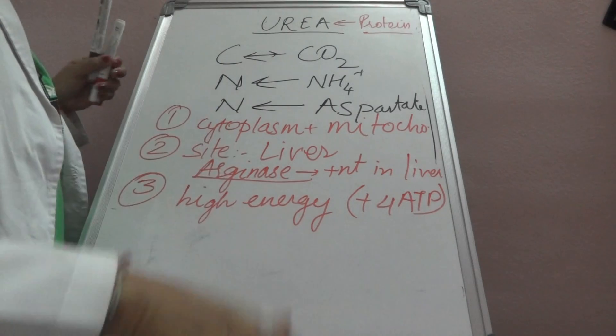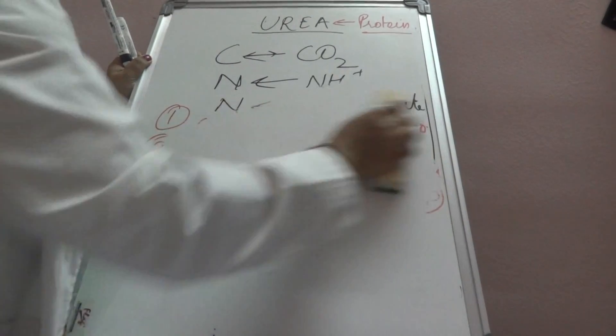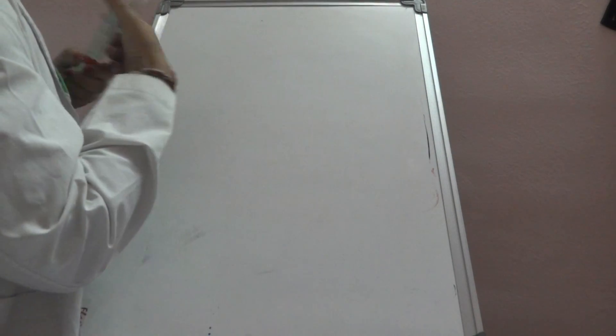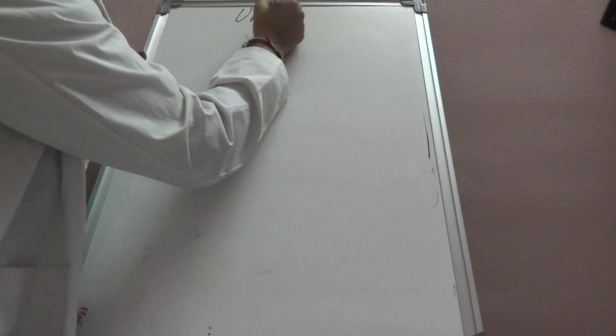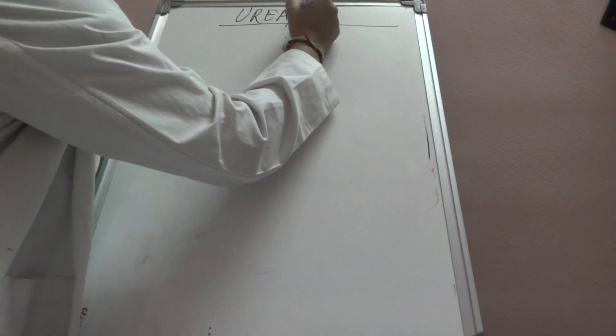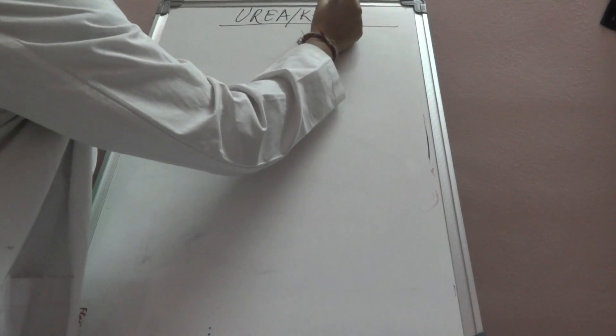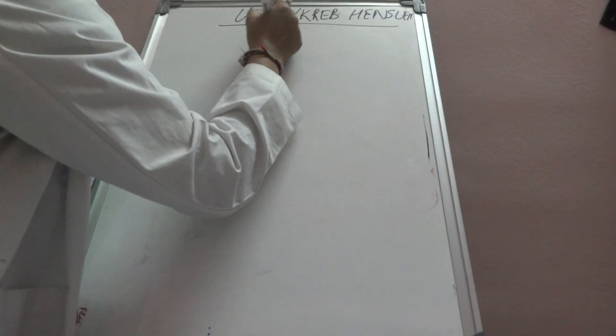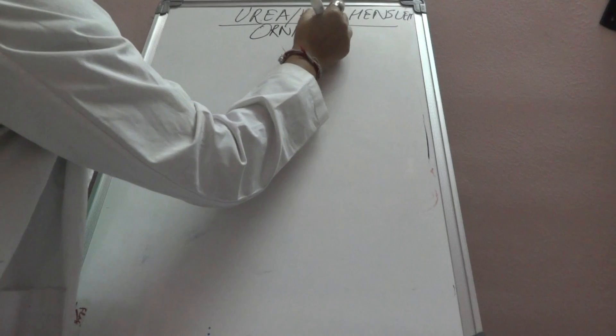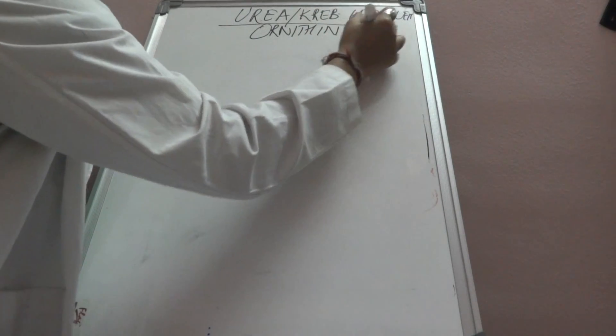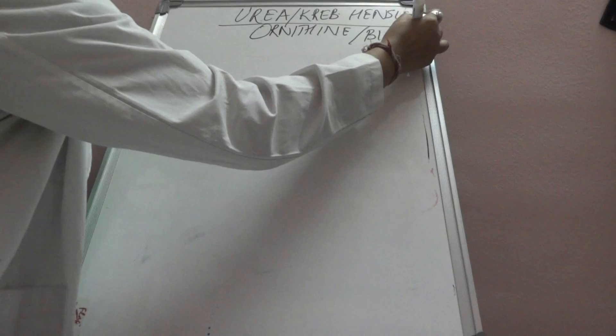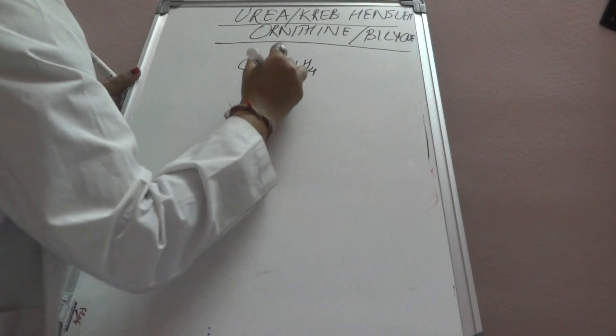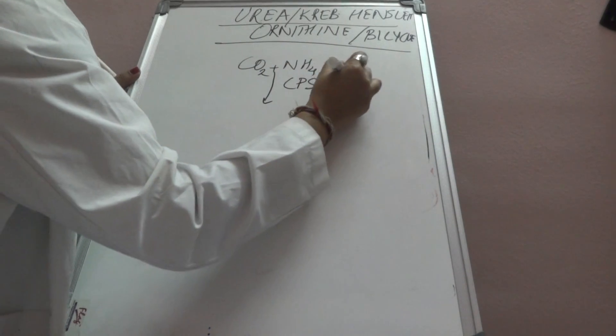Now we discuss the urea cycle. The urea cycle is also called the Krebs-Henseleit cycle, ornithine cycle, or bicycle. Carbon dioxide and ammonium react in the presence of carbamoyl phosphate synthase.